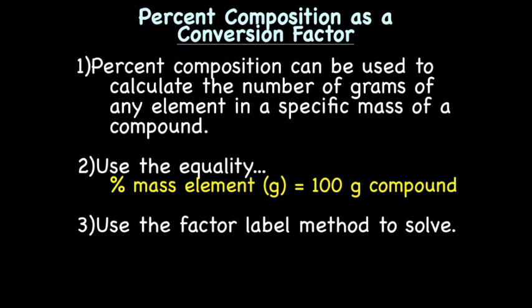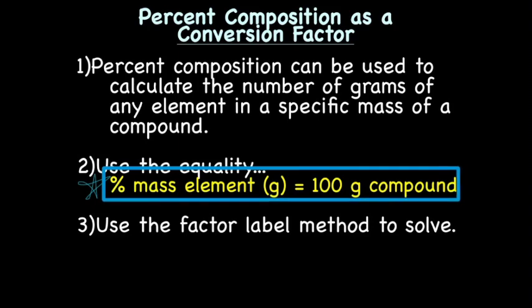We can use percent composition as a new conversion factor or an equality, like one mole equals 6.022 times 10 to the 23rd atoms, or one mole equals the molar mass. So, percent composition can be used to calculate the number of grams of any element in a specific mass of the compound. And we'll be using the equality percent mass of an element in grams equals 100 grams of the compound. That right there can go on your conversion table.